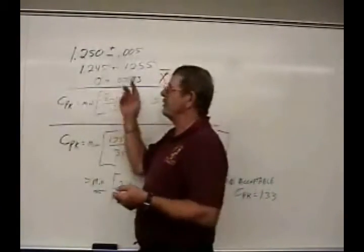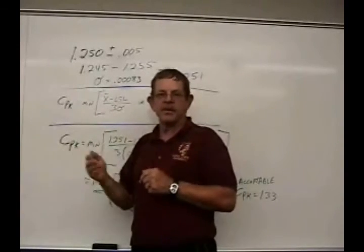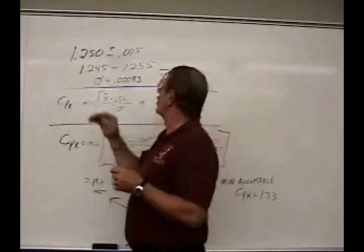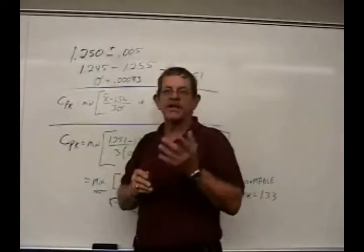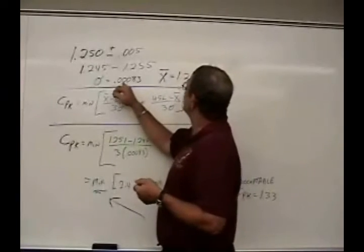If you measured 100 parts and you added it all up and divided it by the number of parts and found out what the deviation was between all those parts, the standard deviation in this case, for the example we're using out of the textbook, is .0083.